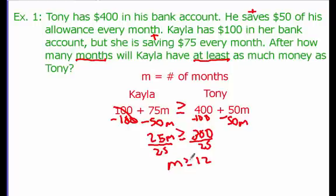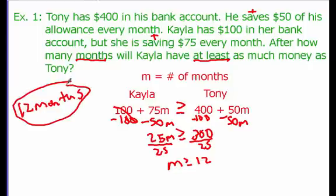When M is greater than or equal to 12, Kayla has at least as much money as Tony. The smallest solution is 12 months. So after 12 months — a full year — Kayla will have at least as much money as Tony. Before that, Tony has more money: at month 11, at month 5, Tony has more. But starting at month 12, they're even, and any month after that Kayla will have more.